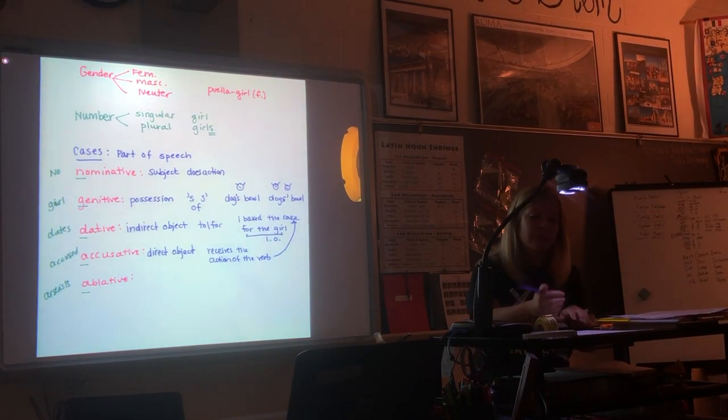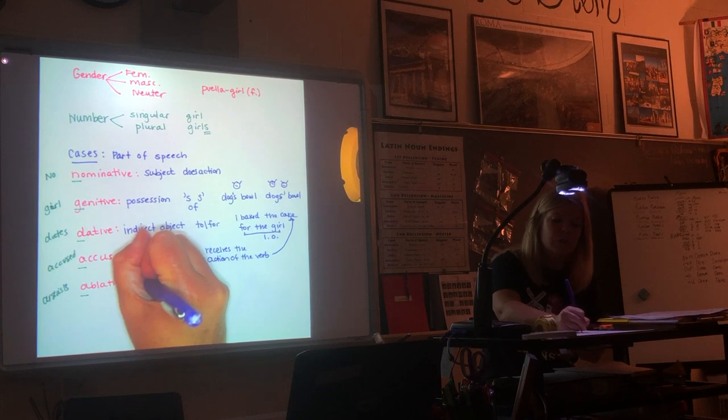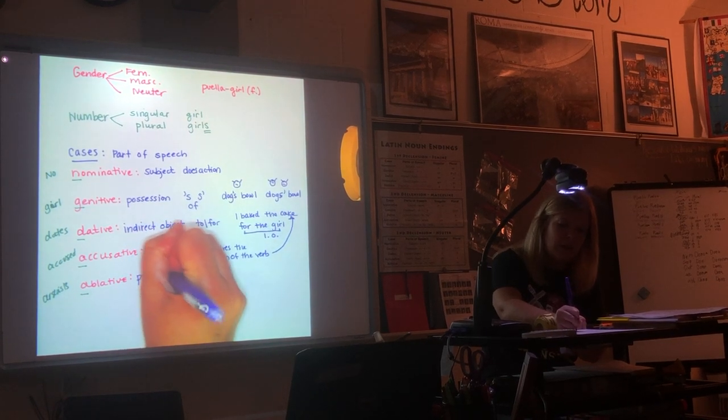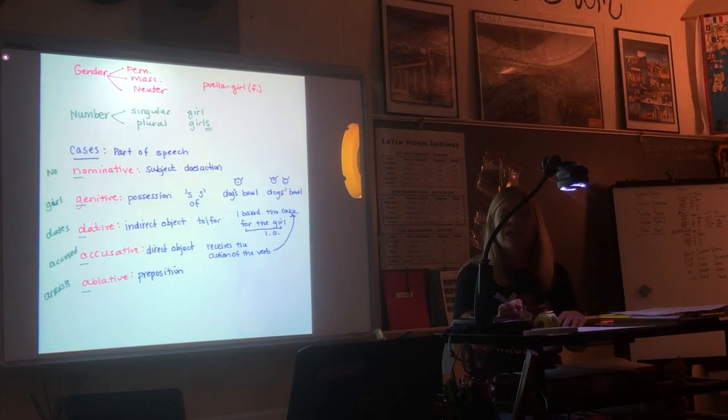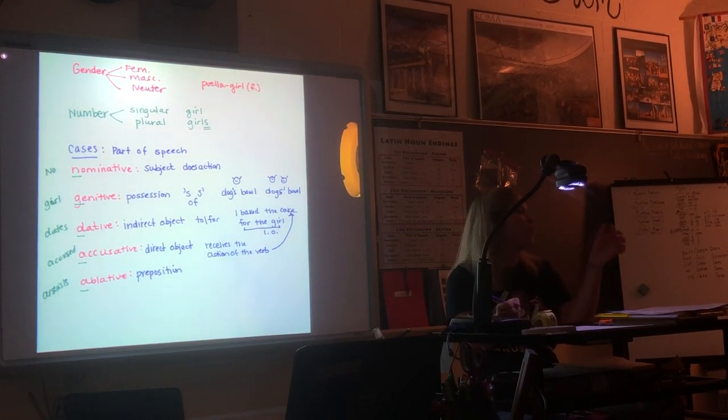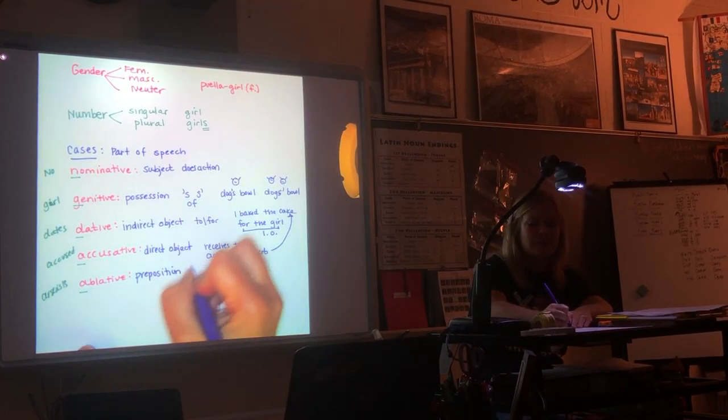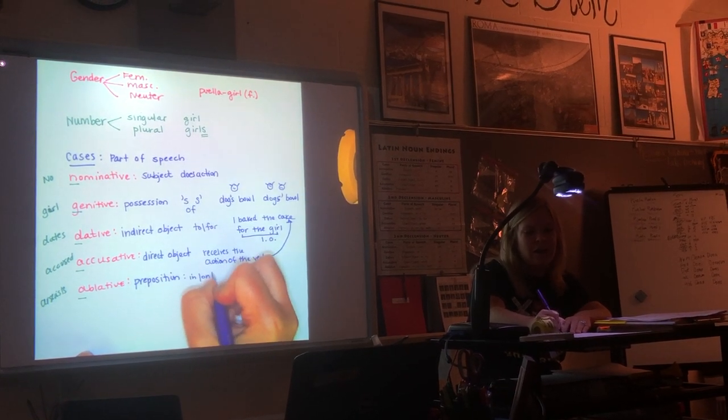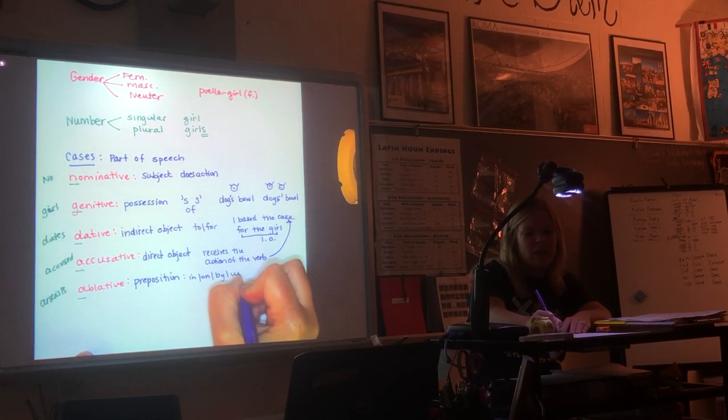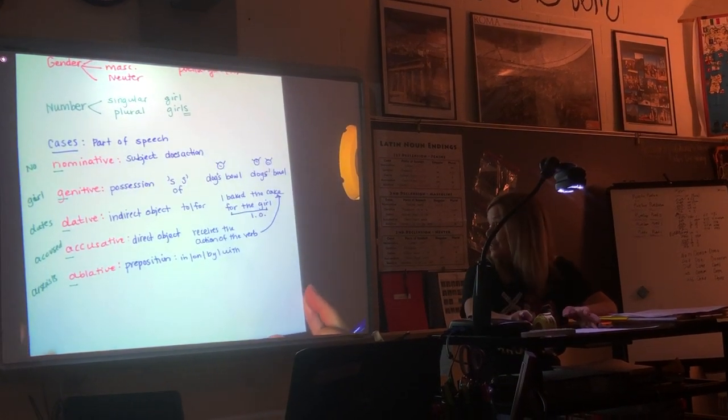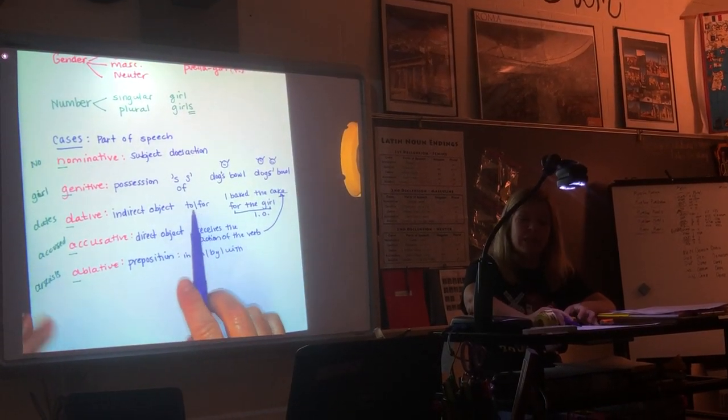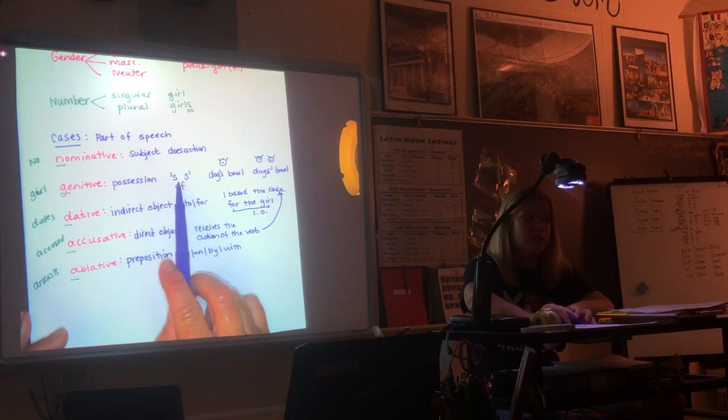And then ablative is pretty easy. It is always used with a preposition. That sounds tough. What's a preposition? Here's a trick for you. It's one of those little tiny words: in, on, by, with. It's a little word, but not 'to' or 'for', because that's dative, and not 'of', because that shows possession.